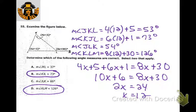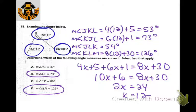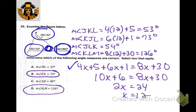The remote interior angles are equal in measure to the exterior angle — so you add those two together and set it equal to the exterior angle. Solve for x, then plug it in to find every angle measure. You can find the interior angle by doing 180 minus the other two, or 180 minus the exterior angle since it's a linear pair.